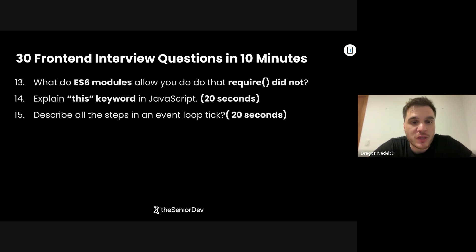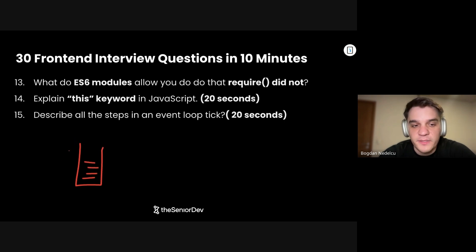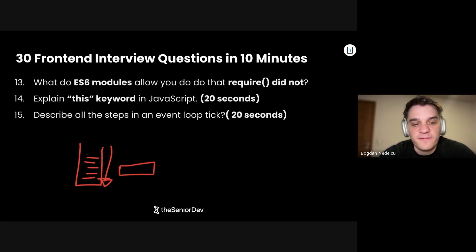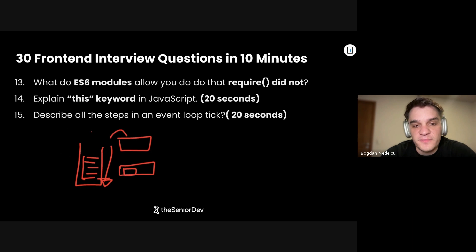Question number 15: Describe all the steps in an event loop tick. We run the stack all the way down when there's no more synchronous code to execute. Then we check our microtask queue — if there's a resolved promise, we take its callback and execute it. Then we repaint the browser so the user gets updates. Then we look at the macrotask queue. When we pick something from the macrotask, the next tick starts.